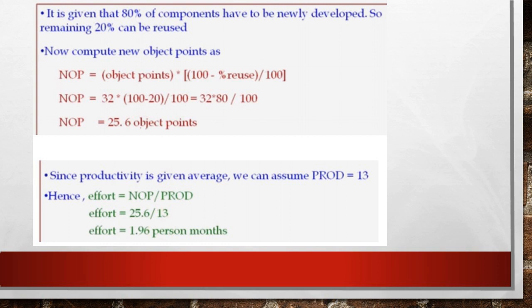Now we need to compute the effort. When we discussed the calculation of productivity rate, I had mentioned the different productivity levels. Here we assume that the productivity level is nominal. That is the productivity level is with value 13. So effort is computed as NOP divided by productivity. That is effort equals 25.6 divided by 13, which equals 1.96 person months.